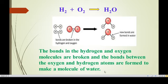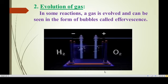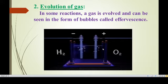The second characteristic is evolution of a gas. In some reactions, a gas is evolved and can be seen in the form of bubbles — those are called effervescence. For example, in the electrolysis of water, water is broken down into hydrogen gas and oxygen gas by passing electricity through it. You can see the bubbles as hydrogen gas is liberated at one electrode and oxygen gas at the other. Evolution of gas is also one of the characteristics of a chemical reaction.